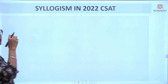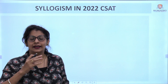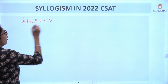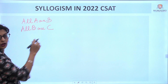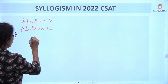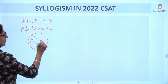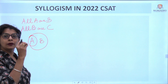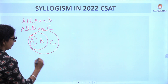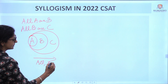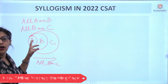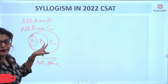We have three types of basic statements: All, Some, and No. Let's start with the 'All' type. For example: All A are B, All B are C. We make a Venn diagram — All A are B means A is fully inside B, and All B are C means B is fully inside C. If the conclusion is 'All A are C,' it is automatically true because all A are inside B and all B are inside C.